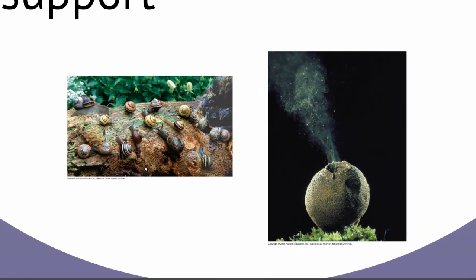Here we've got a bunch of garden snails. They're all the same species. However, some are big, some are small, some are yellow, some are brown — so there's variation within a species.